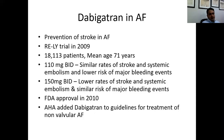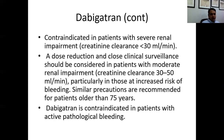In atrial fibrillation, the RE-LY trial in 2009 enrolled 18,000 patients with a mean age of 71 years. Two doses were compared: 110 mg twice daily showed a similar rate of stroke and systemic embolism and lower risk of major bleeding; 150 mg twice daily showed lower rates of stroke and systemic embolism with a similar risk of major bleeding. The FDA approved dabigatran for prevention of stroke in atrial fibrillation; the usual dose is 150 mg twice daily, though 110 mg twice daily can be used for patients at higher bleeding risk.